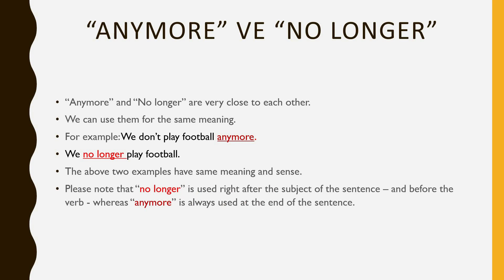There is a very important point I want us to note: 'no longer' is used right after the subject of the sentence — that is, before the verb — whereas 'anymore' is always used at the end of the sentence. This lets us understand that when you use 'no longer', it must be after the subject and before the verb; and 'anymore' should be used only at the end of the sentence. Akadashlar, 'no longer' nerede kullanabiliriz? 'No longer' cümlenin öznesinden hemen sonra, yani cümlenin fiilinden önce kullanabiliriz. Ve 'anymore' cümlenin sonunda kullanabiliriz — yani sadece cümlenin sonunda kullanılabilen bir kelimedir.